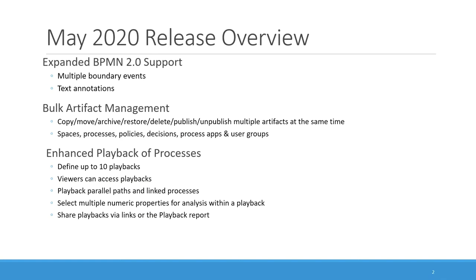BlueWorks Live editors can now attach up to three boundary events to an activity within their process diagrams. They can also add descriptive text to their process diagrams using text annotations. Multiple artifacts can be copied, moved, archived, restored, deleted, published, or unpublished all at the same time.